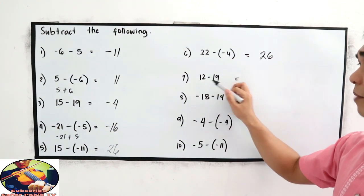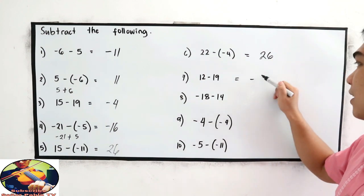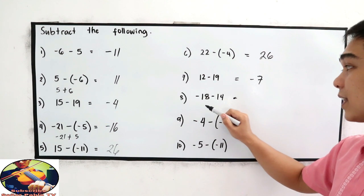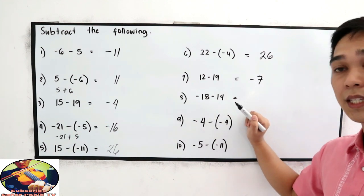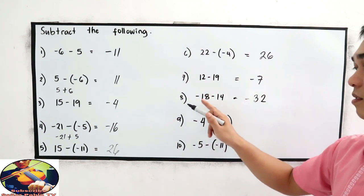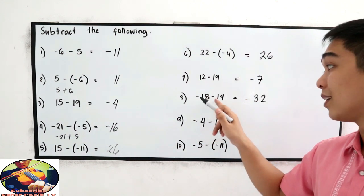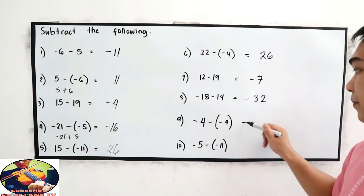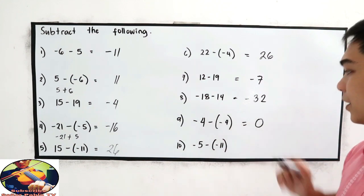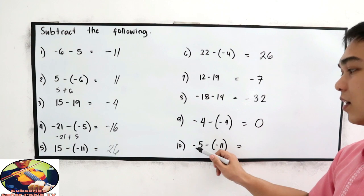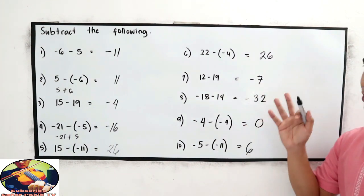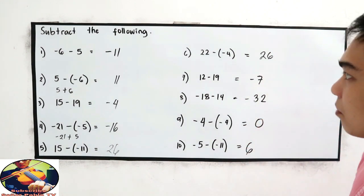Number 7 — 12 minus 19 — is negative 7. Number 8 — negative 18 minus 14 — is negative 32, because they are both negative: add the numbers and copy their sign, which is negative. Number 9 — negative 4 minus negative 4 — becomes negative 4 plus 4, which is 0. Number 10 — negative 5 plus 11 — is positive 6. So these are our answers for numbers 1 to 10.